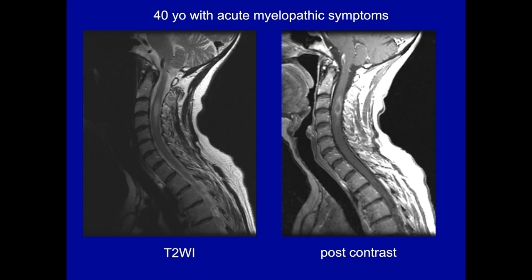If you see subarachnoid hemorrhage you can really zero in on ependymoma. But could this be anything else? Another intramedullary lesion to consider is hemangioblastoma — it typically shows an intensely enhancing nodule with surrounding T2 hyperintensity. Think about the disease syndrome associated with it: VHL, von Hippel-Lindau. Although they can occur without VHL, maybe 40% will have VHL. One associated finding is polycythemia. Importantly, all hemangioblastomas are hypervascular, so look for large blood vessels on angiography.